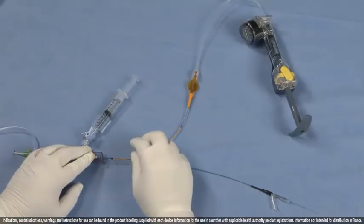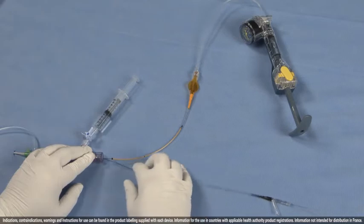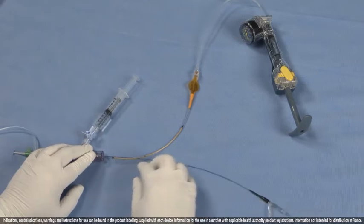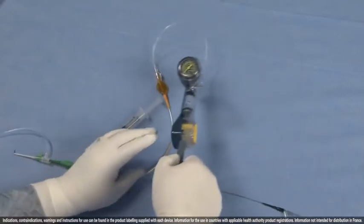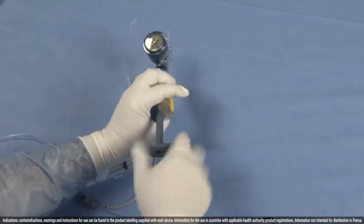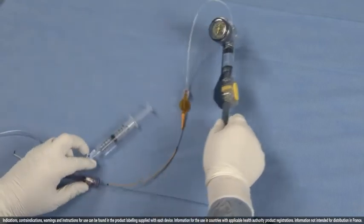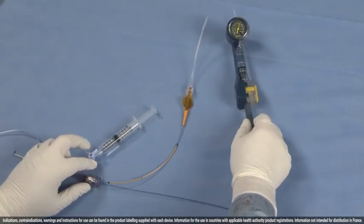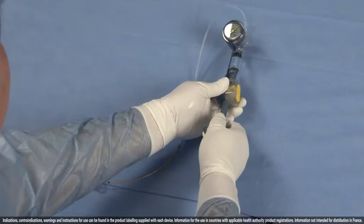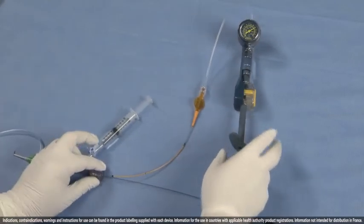The next step is to ensure that Trapper is distal to the interventional device. So check it briefly on fluoro and then inflate Trapper between 12 and 20 atmospheres. Remember, higher pressure will give you higher wire securement. The rate of burst pressure on Trapper is 20 atmospheres. Do not exceed it.